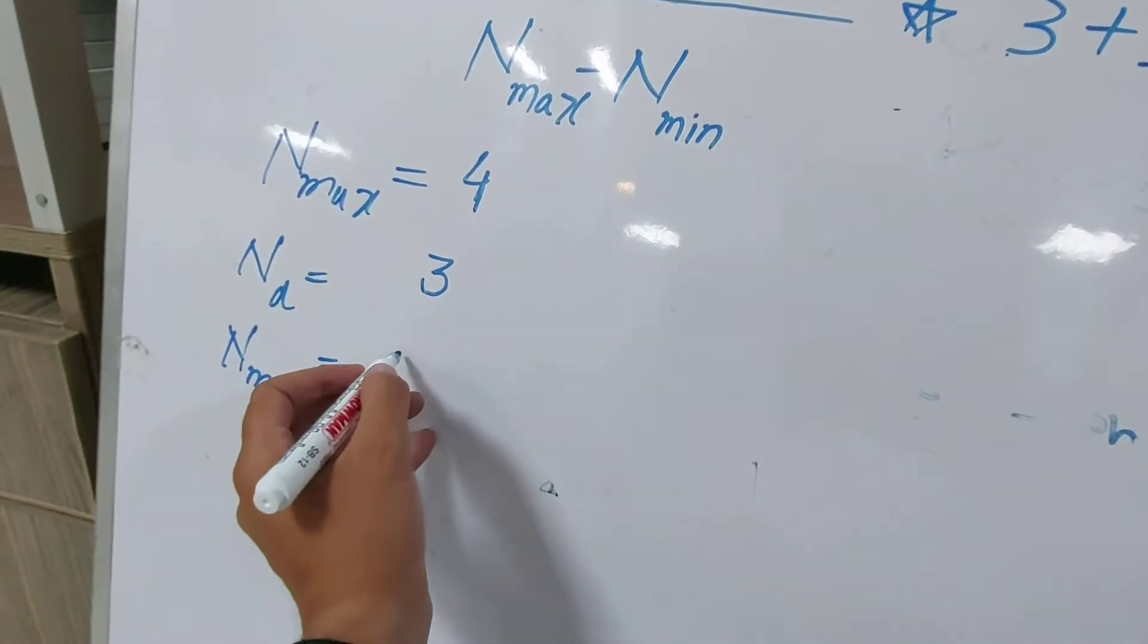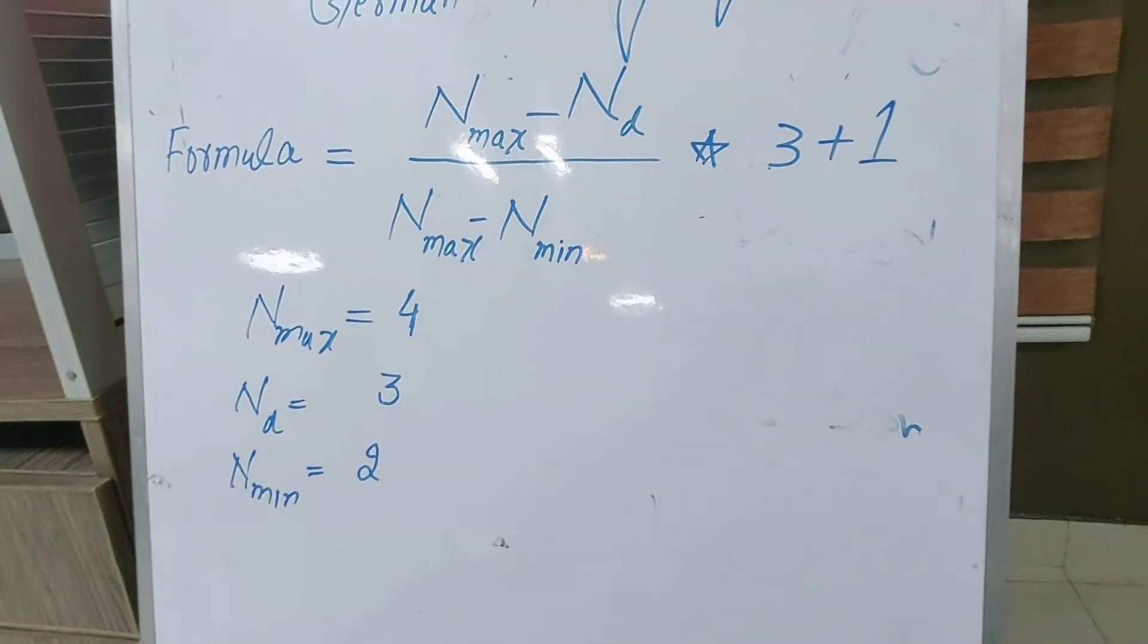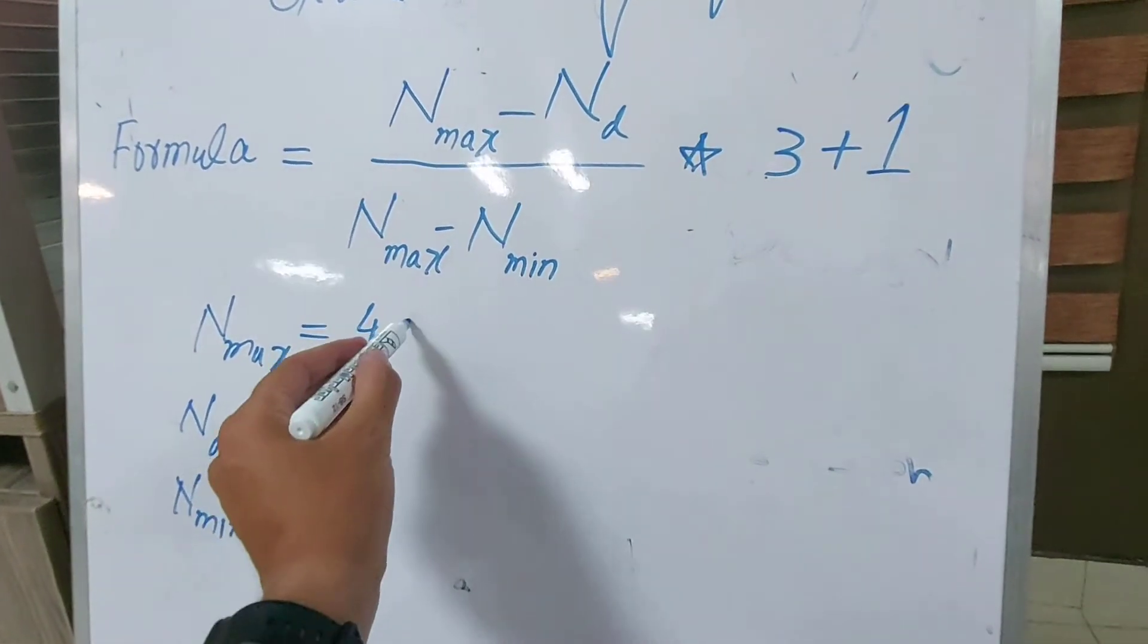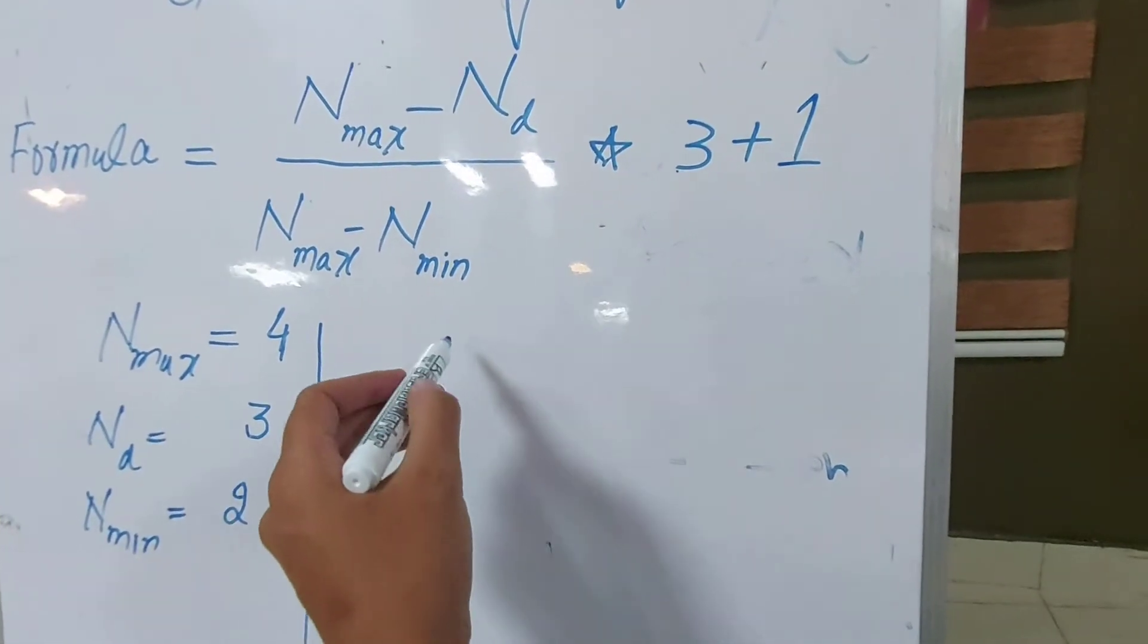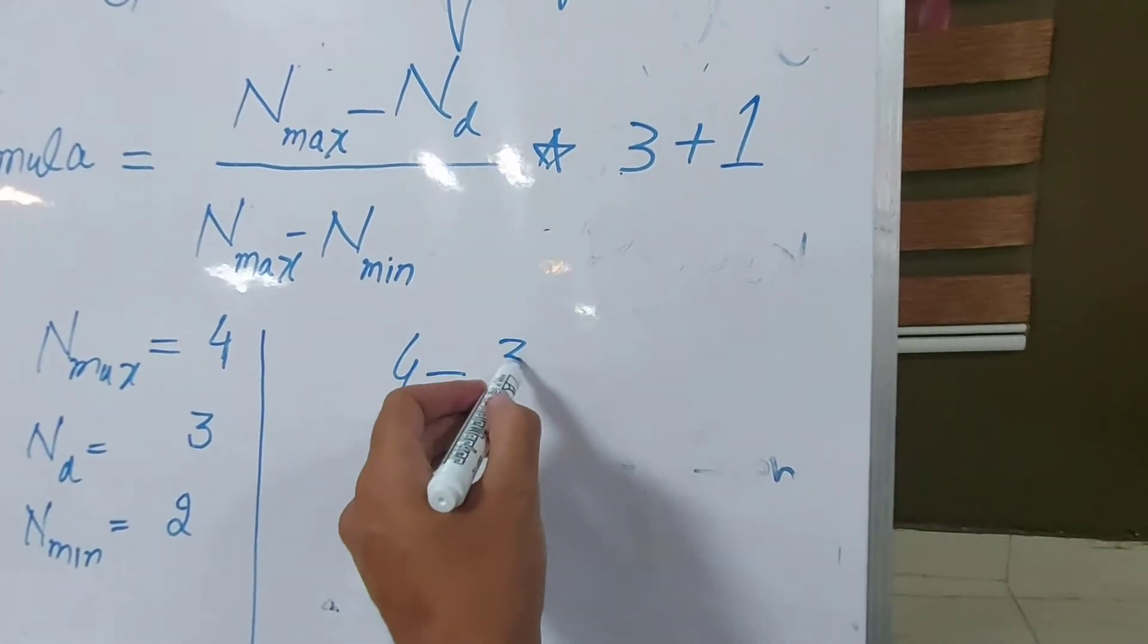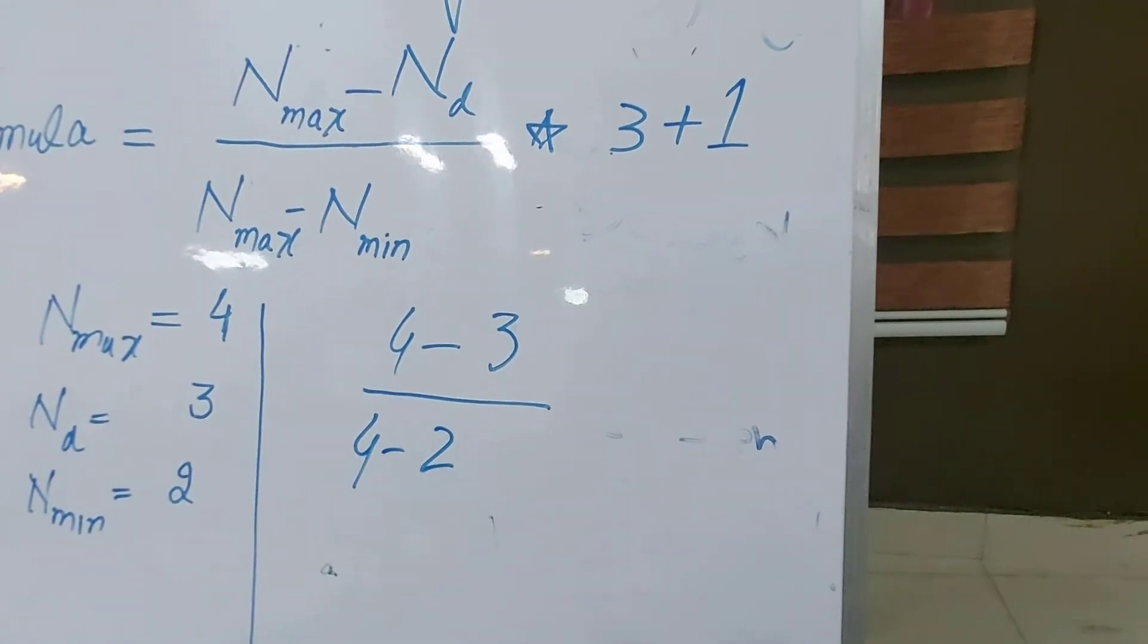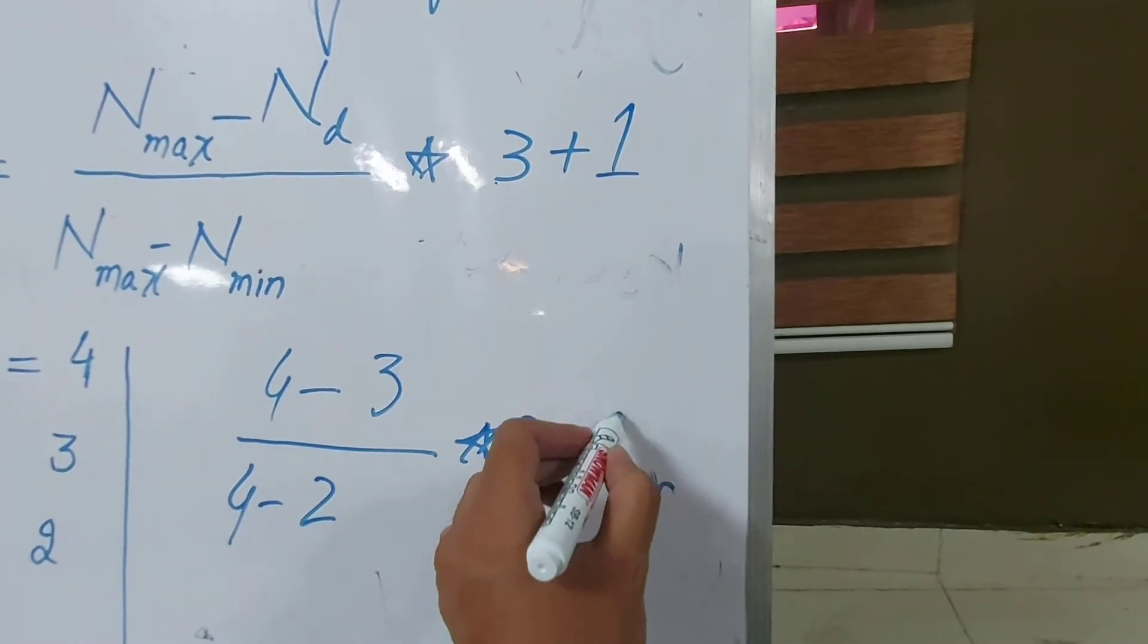For example, if the minimum CGPA for passing is two, then how can we calculate this? You have to use this formula. For example, I use these values: Nmax is four, Nd is three, and minimum CGPA is two. Multiply this result by three and add one.